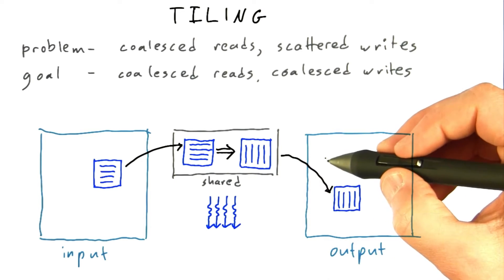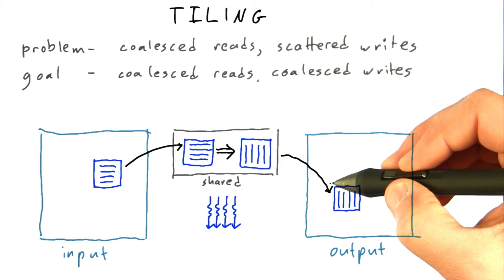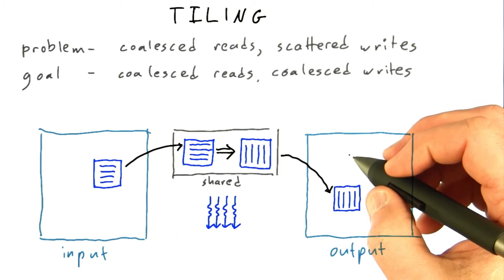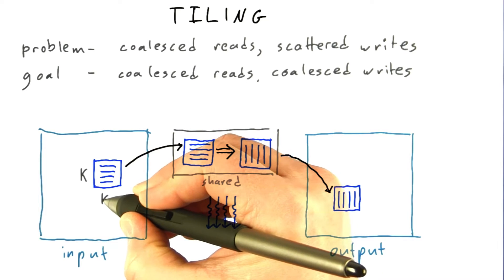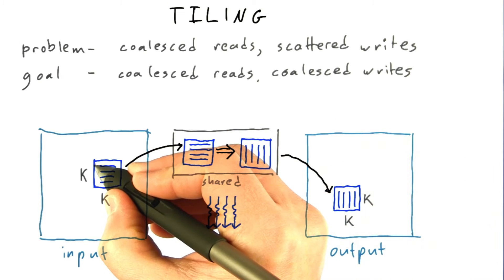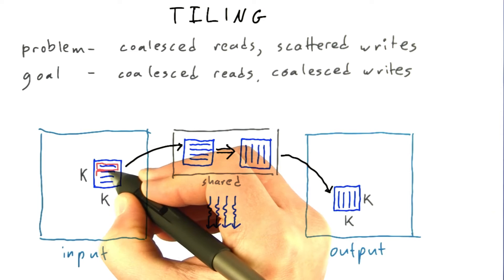Finally, the threads in the thread block will work together to copy the elements out. And the key is this: if our tile is large enough, say it's a K by K tile, say K is 32, in that case,